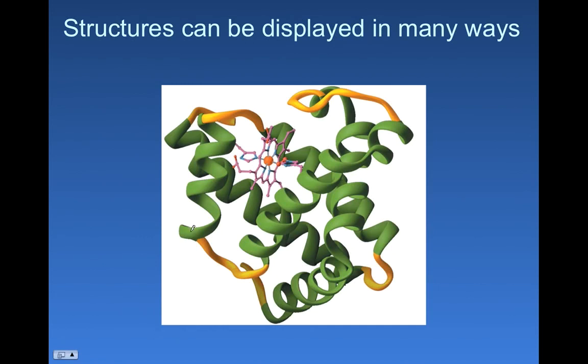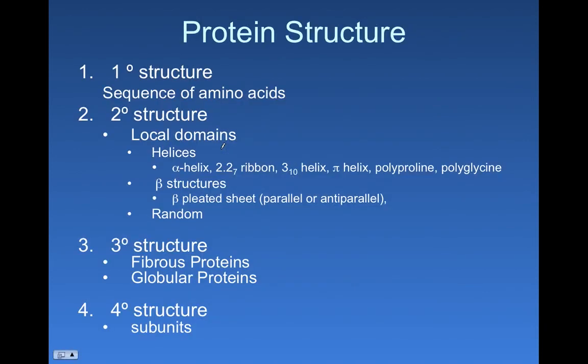So if we go back here, this alpha helix is a description of a secondary structure. It's not the description of the whole protein. It just says right here, this local piece of it is an alpha helix. That's a description of a secondary structure.